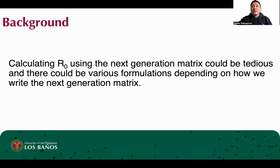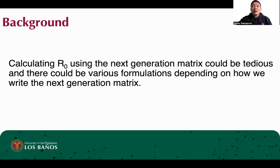Deriving the basic reproduction number, such as using the next generation matrix, could be time consuming and tedious. Also, there could be different derived formulations. In our method, there is no need to set up matrices, no need to compute eigenvalues with non-numeric parameters. The user of our method just needs to run the R code that we have prepared.